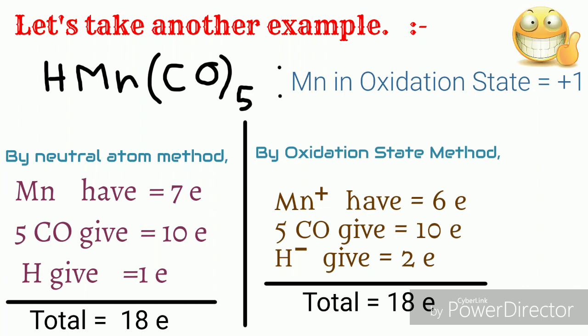You can see the difference here: that in neutral atom method H gives only 1 electron, and in oxidation state method H⁻ gives 2 electrons. This difference you can understand by the table which is in the description below. So both the methods give the same result. You should remember at least one of these methods.